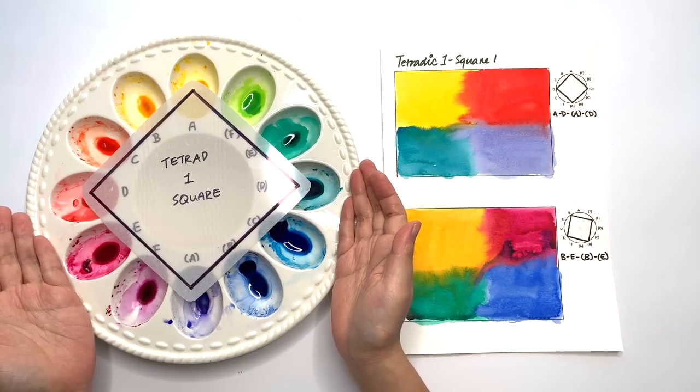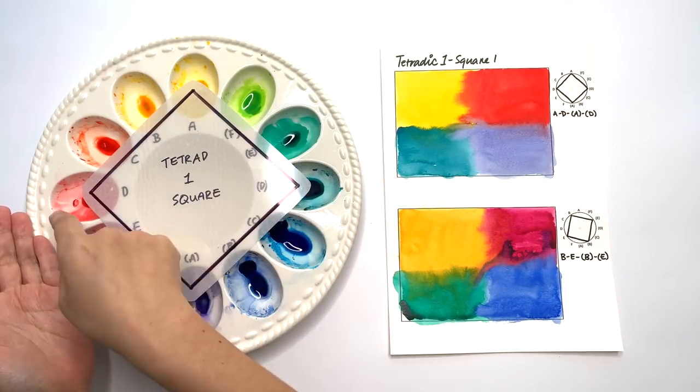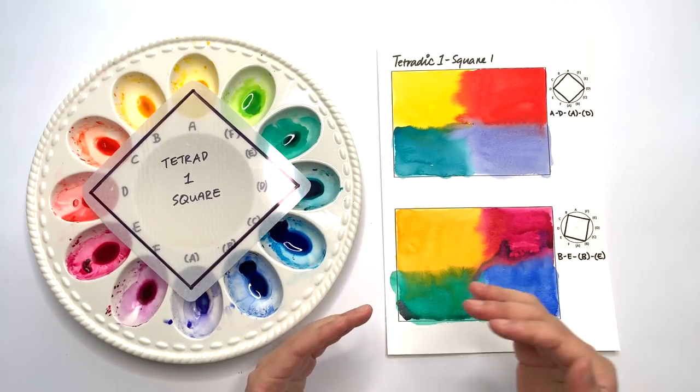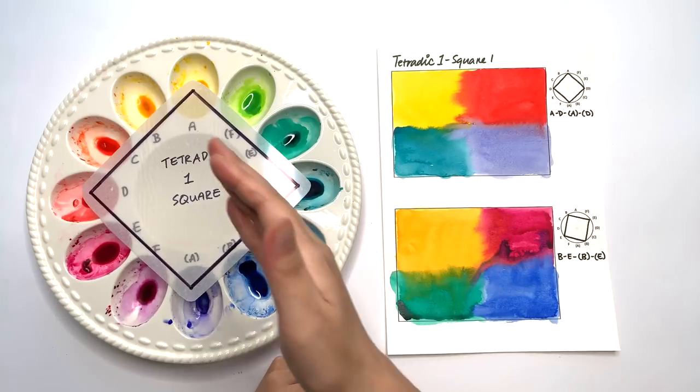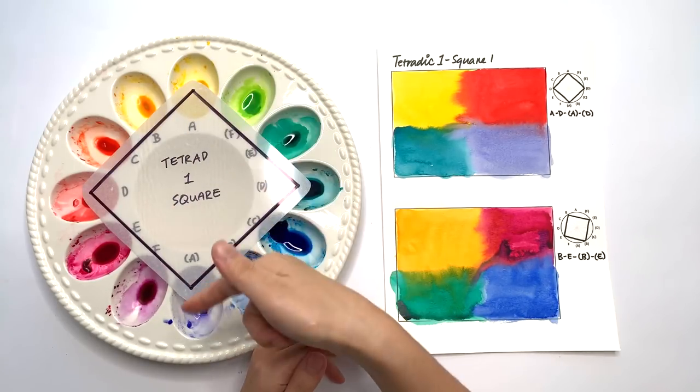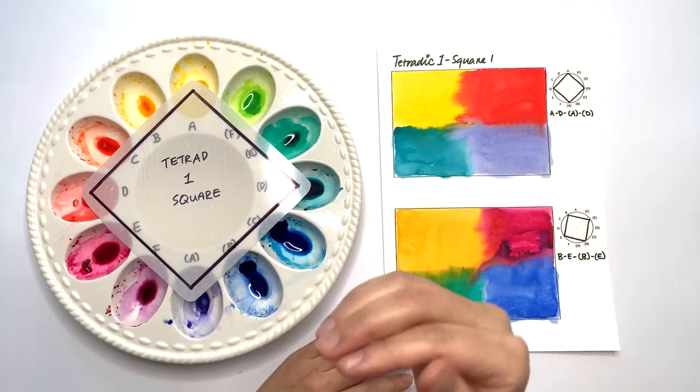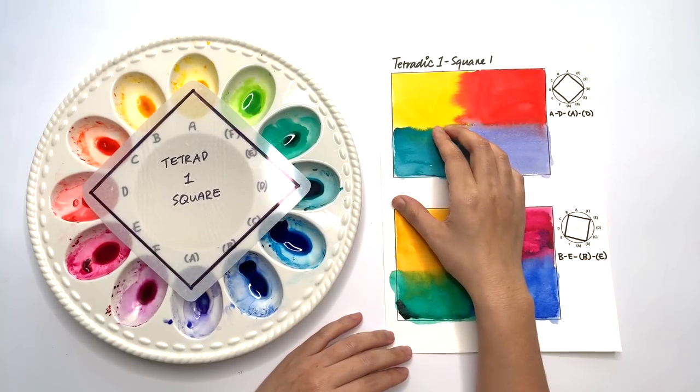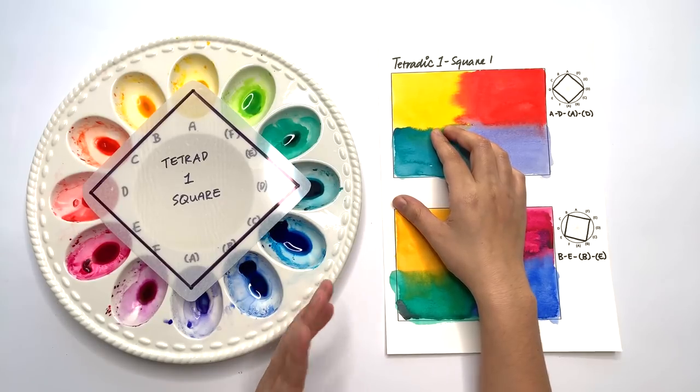The first one we're going to cover is the square, and basically it's a square which contains two pairs of complementary colors. With this color scheme, you have to be very careful how you place the colors because as we know the complementary colors will create neutralized colors or mud colors.